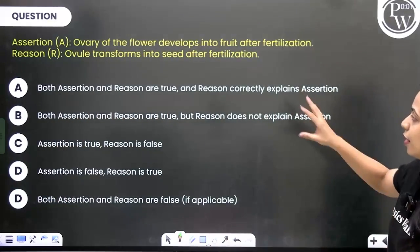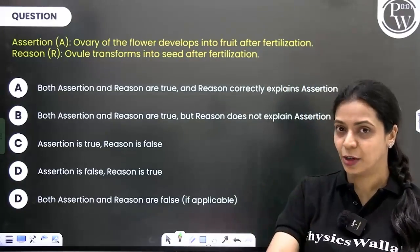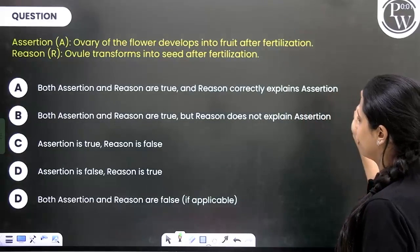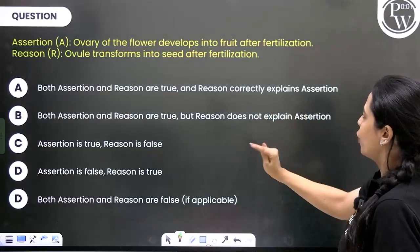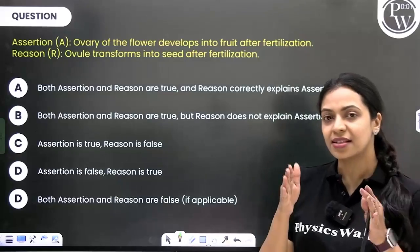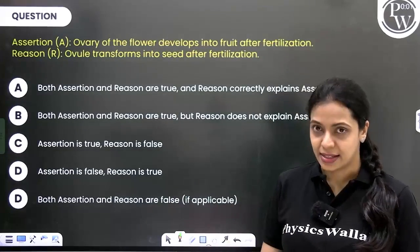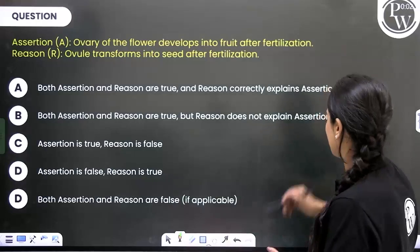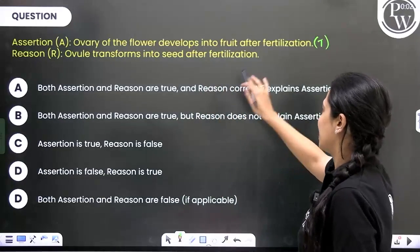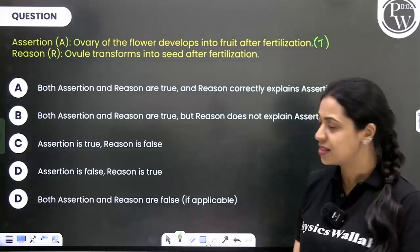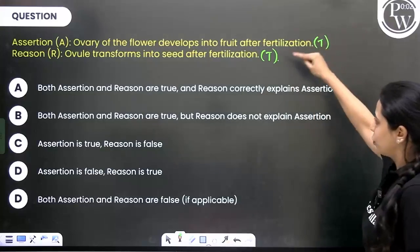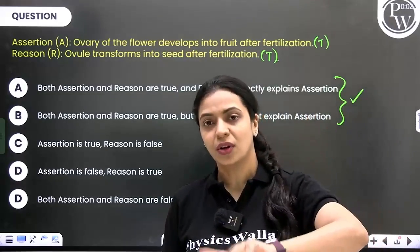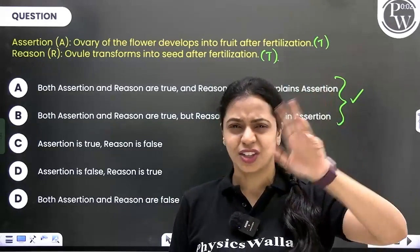Here is another assertion and reason type of question. Read each statement independently. Assertion: ovary of the flower develops into fruit after fertilization. Reason: ovule transforms into seed after fertilization. Does the ovary develop into fruit after fertilization? Yes — post-fertilization changes happen in flowers and the ovary transforms into the fruit, so this is true. Does the ovule transform into seed after fertilization? Yes, that is also true. So both statements are true, and we now have to choose between the two options where both are correct.